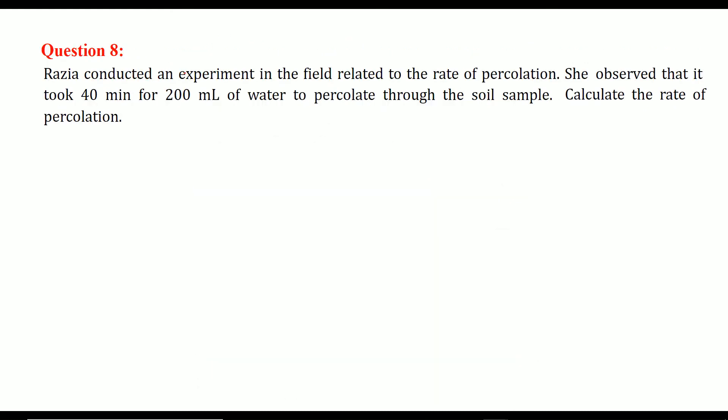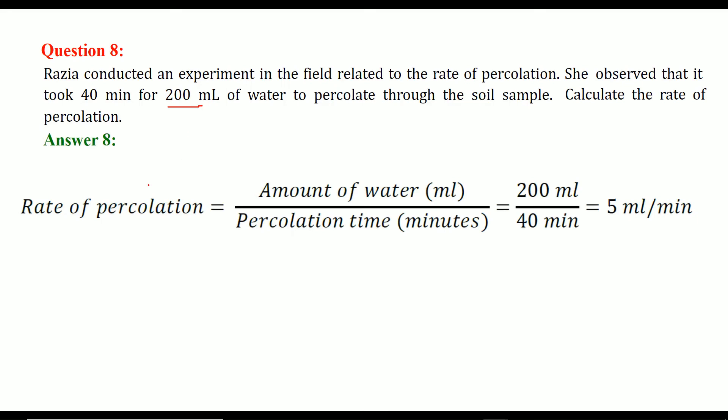Razia conducted an experiment in the field related to the rate of percolation. She observed that it takes 40 minutes for 200 ml of water to percolate through the soil sample. You have to calculate the rate of percolation. So rate of percolation is simple amount of water divided by percolation time. So this is 200 ml and this is 40 minutes. So 200 ml by 40 is 5 ml per minute.